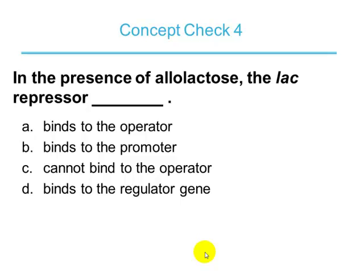In the presence of allolactose, the allolactose binds to the repressor and inhibits it — this double negative gives a positive result. So the lac repressor in the presence of allolactose cannot bind to the operator, allowing transcription to proceed. The correct answer is: the lac repressor cannot bind to the operator when allolactose is present.